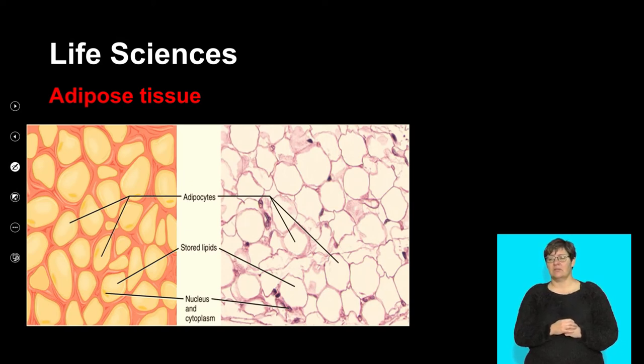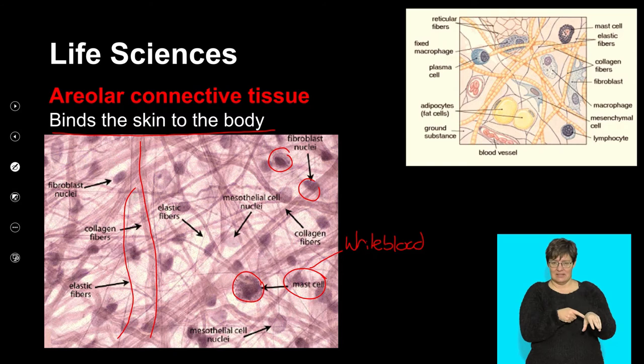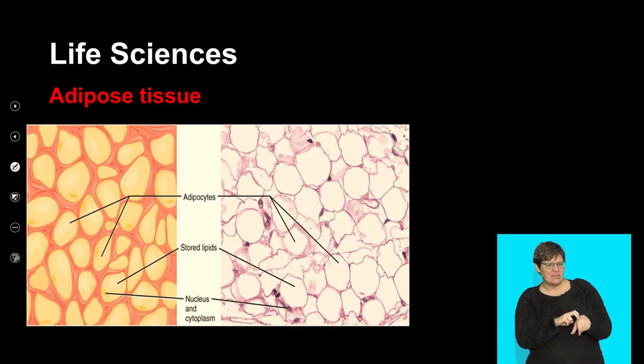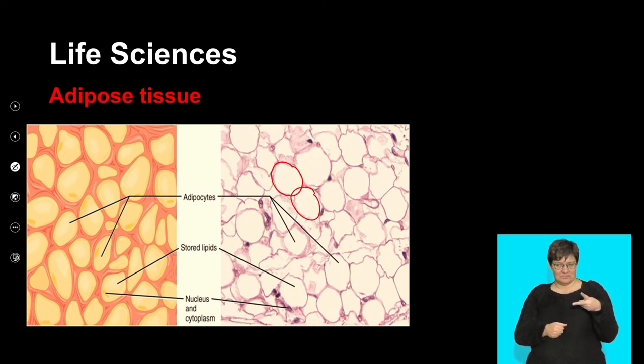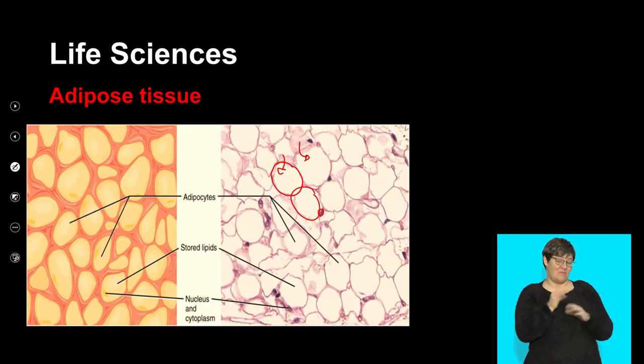Underneath the skin I can find white blood cells — because if I cut myself my body needs to protect itself. I also have fat cells, which are round. My body converts excess carbohydrates and lipids into this fat, with the nucleus visible underneath. Adipose tissue — fat tissue — is found underneath the skin and it's important because it insulates. It's also found around organs and around nerve cells as an insulator. However, if you eat too much and it fills up, it can be bad for you.